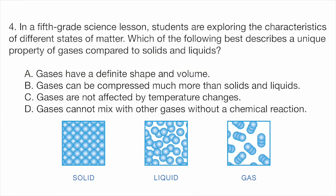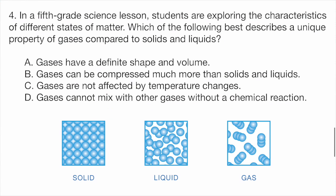Question four. In a fifth grade science lesson, students are exploring the characteristics of different states of matter. Which of the following best describes a unique property of gases compared to solids and liquids? A, gases have a definite shape and volume. B, gases can be compressed much more than solids and liquids. C, gases are not affected by temperature changes. D, gases cannot mix with other gases without a chemical reaction.